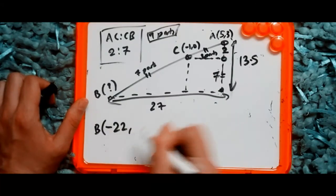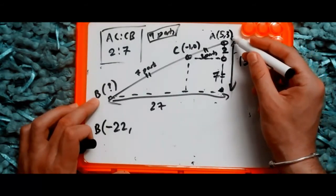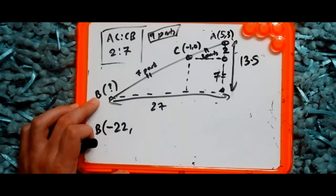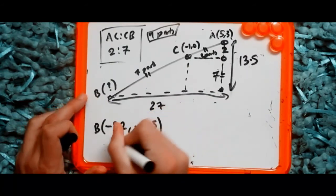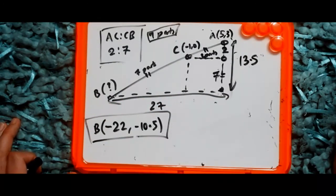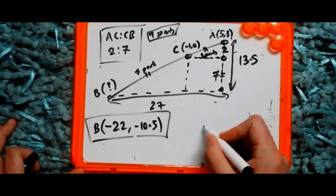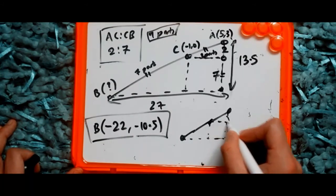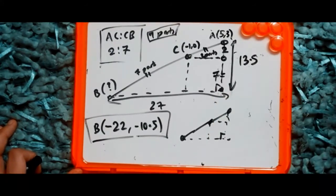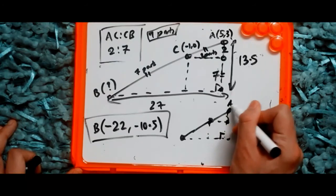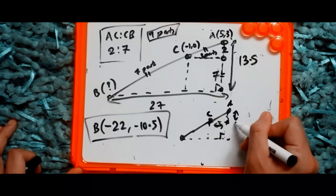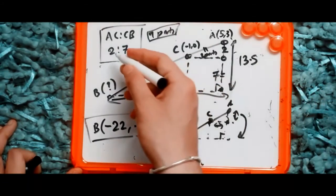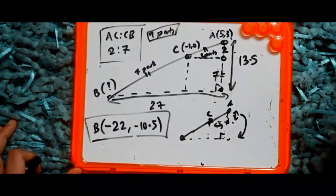For the y-axis: from 3 we're going down by 13.5, so 3 minus 13.5 gives us minus 10.5. So B is at (minus 22, minus 10.5). That's literally how you find any point on a line segment — convert the line into a right-angle triangle, work out the lengths along each axis, and use the ratio to find the proportion.